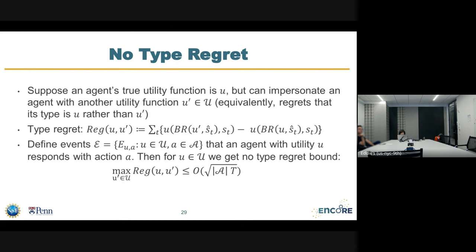Some more applications worth briefly flashing. One is type regrets — in a game setting, an agent could have utility u but worry that utility u' might be better, trying to impersonate utility u'. You can define a notion of type regret as the regret that happens when you best respond to predictions as if you had utility u', but in reality your utility is u. By instantiating appropriate events — one for each utility function and action — you get a nice bound on type regret for such families, with no logarithmic factor in the family size.